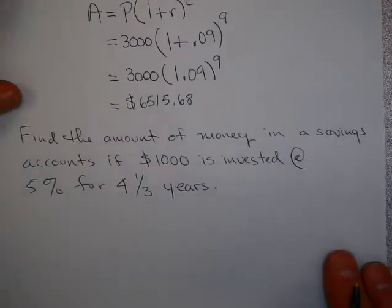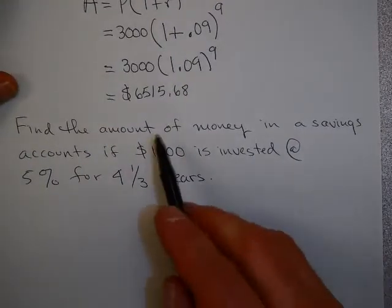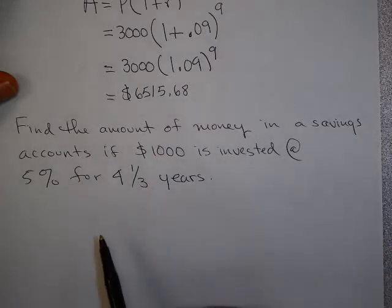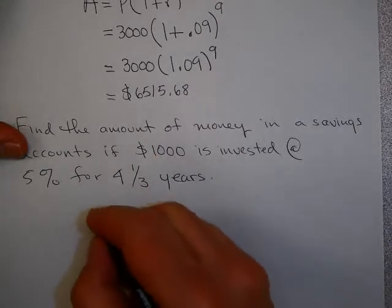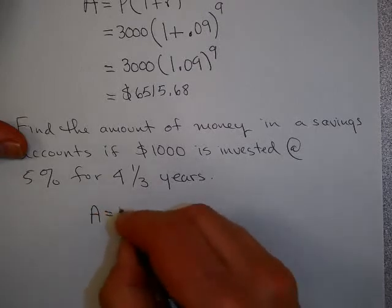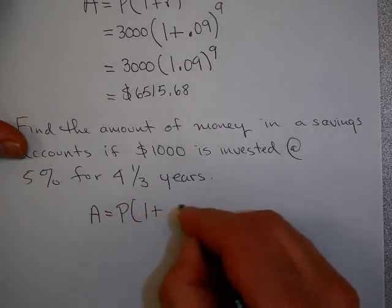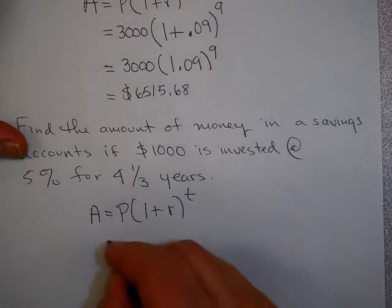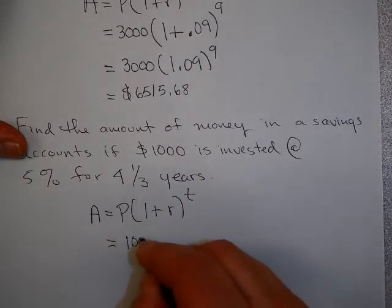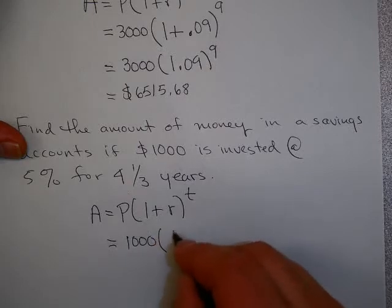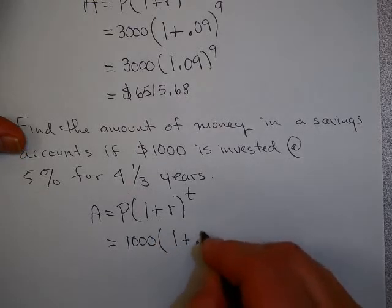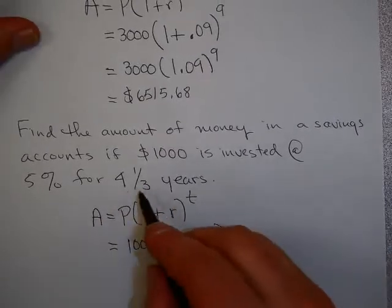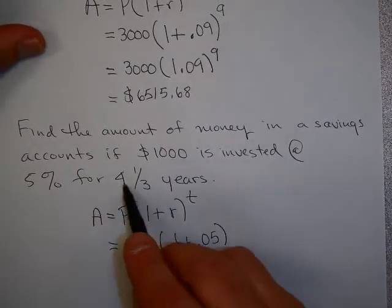Find the amount of money in a savings account if $1,000 invested at 5% for 4 and a third years. So again, I'm going to use this formula. My present value is $1,000. My interest rate is 5%. And I have 4 and a third years. Here's where we can use a rational exponent.